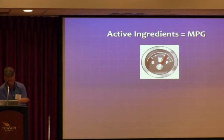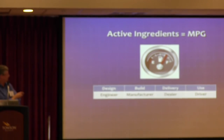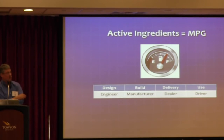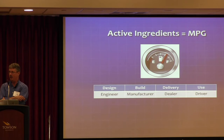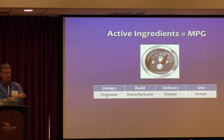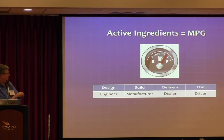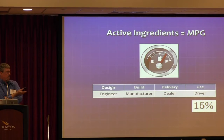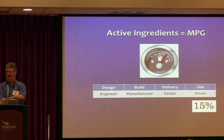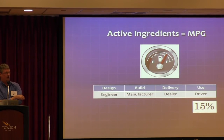Going back to Homer in the context of miles per gallon — if we go back to the value chain for the automotive industry, where do you think we can get the most bang for the buck for increasing miles per gallon? Many at this conference were talking about teachers and kids, so you'd probably say at the end of the value chain. But the reality is research suggests we can probably get about 15% improvement by changing the way you drive.